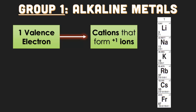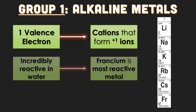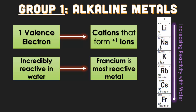So in our very first group on the periodic table — which is lithium, sodium, potassium, rubidium, cesium, and francium — they all have one valence electron. That means they form cations with a positive one charge. They're also incredibly reactive in water, which means that as you go down the list, francium is going to be the most reactive metal. If we had a sample of francium large enough and you threw it into the ocean, you would get something like an atomic blast result.